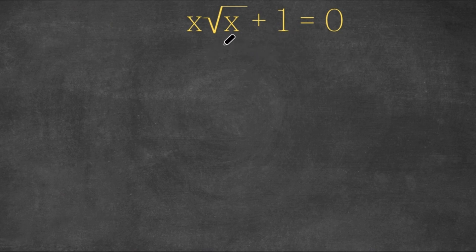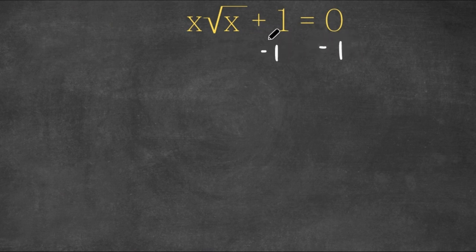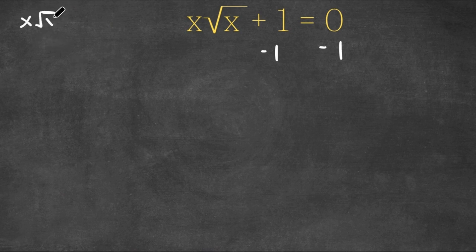We have x times the square root of x plus 1 is equal to 0. What I'm first going to do is subtract 1 on both sides to move this 1 to the right-hand side, so now we get x times the square root of x is equal to negative 1.